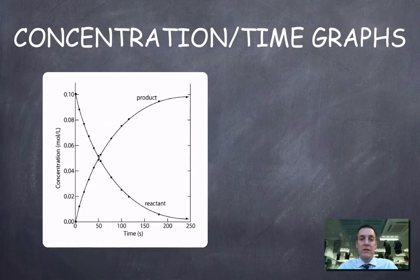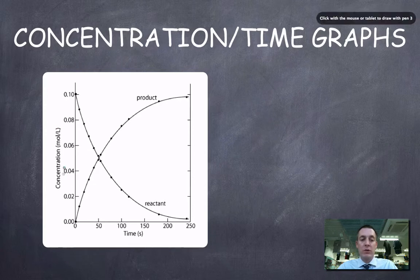There's not really a great deal different between this graph and the last one, except we've got concentration on this axis instead of a number of molecules. Because we can't normally count a number of molecules, but we can measure a concentration.